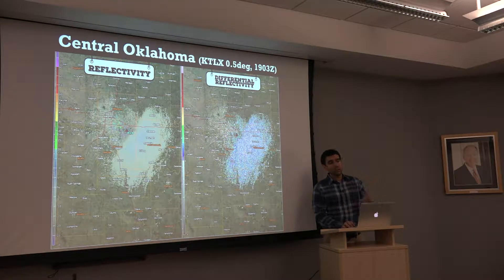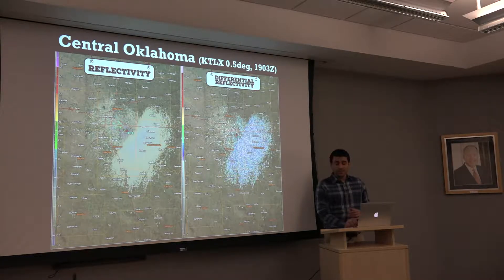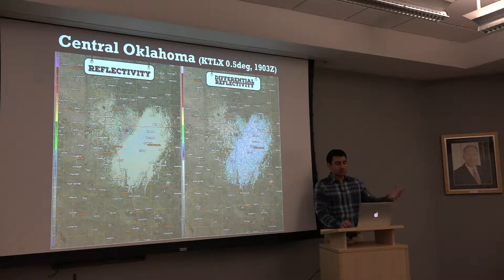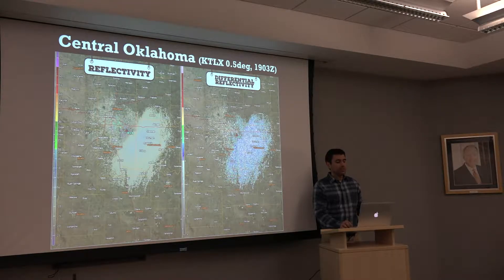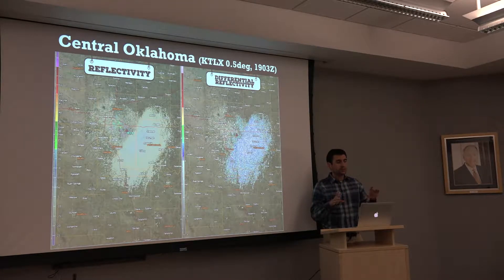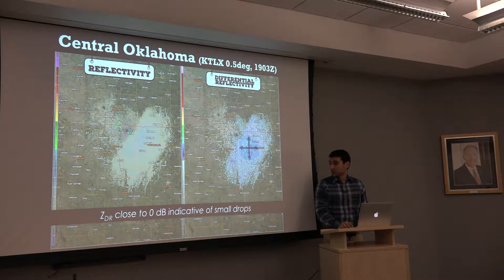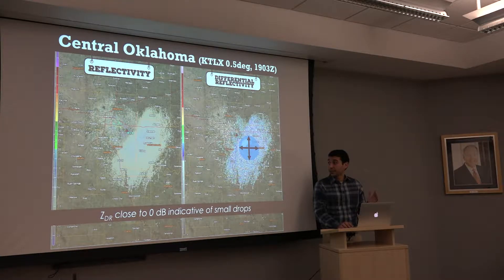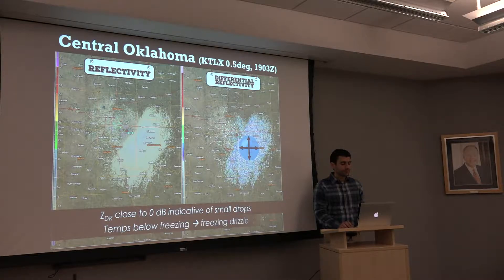Looking at ZDR to get an idea of the shape of the precipitation, we see ZDR is pretty close to 0, about 0 dB. That tells us we have something that's generally spherical. We were dealing near the surface with moist conditions and very dry air aloft, so precipitation was forming very close to the surface — that's why it was so light. ZDR confirms supercooled liquid water: these little spherical drops have equal horizontal and vertical components giving us ZDR close to 0 dB. With temps below freezing at the time, that tells us it's freezing drizzle.